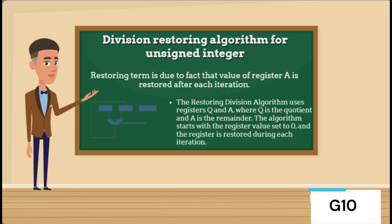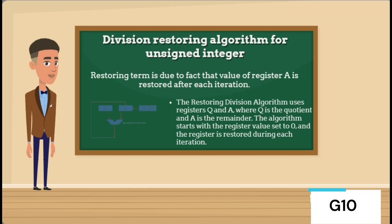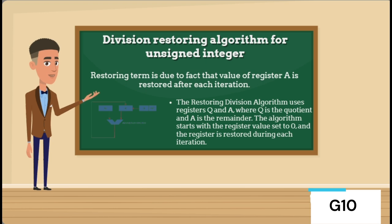In the division restoring algorithm, 'restoring' refers to the process of reverting the value of register A to its previous state after each iteration. This restoration is necessary to maintain accuracy and ensure correct division results. In this algorithm, Q represents the quotient and A represents the remainder. We begin with both registers set to 0. During each iteration, the algorithm performs division operations and the value of register A is restored, ensuring accurate division computations.